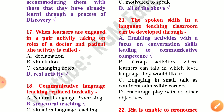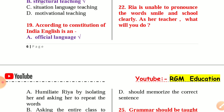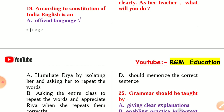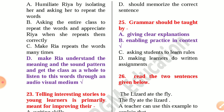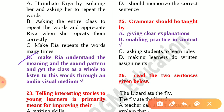Next, number 21: The spoken skills in a language teaching classroom can be developed through enabling activities with a focus on conversation skills leading to communicative competence. Number 22: Riya is unable to pronounce the words 'smile' and 'school' clearly. As a teacher, what will you do? The correct answer is option D: make Riya understand the meaning of the sound pattern and get the class as a whole to listen to these words through an audio-visual medium.